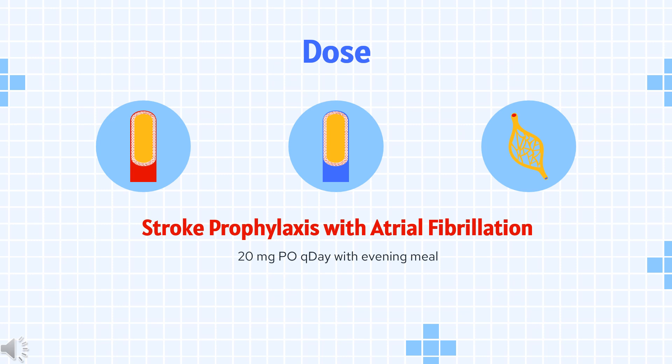Reduction of major cardiovascular events: Indicated, in combination with aspirin, to reduce the risk of major cardiovascular events — CV death, myocardial infarction (MI), and stroke — in patients with chronic coronary artery disease (CAD). Dose: 2.5 mg orally twice daily plus aspirin 75–100 mg once daily. Renal considerations: no dose adjustment needed based on CRCL for risk reduction of major thrombotic vascular events.